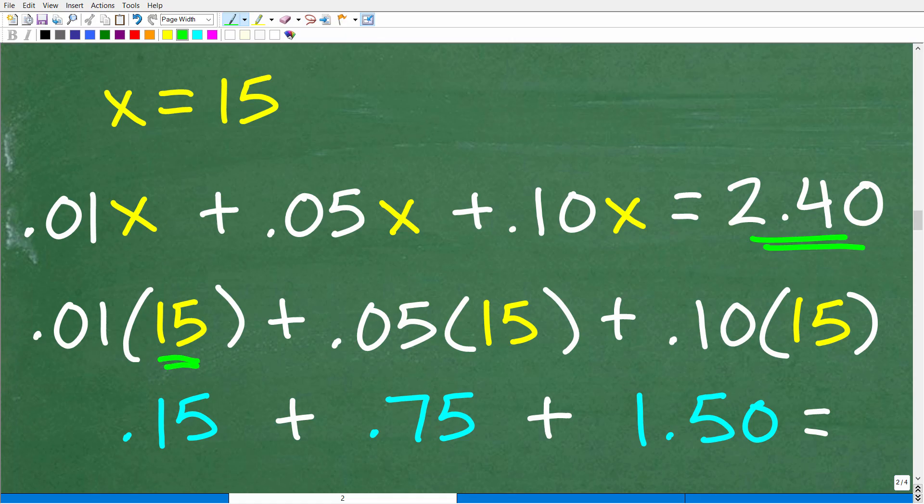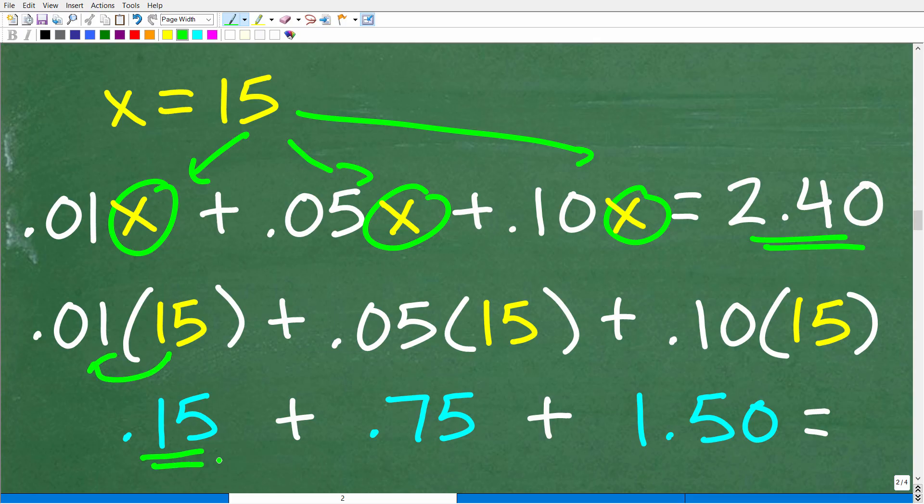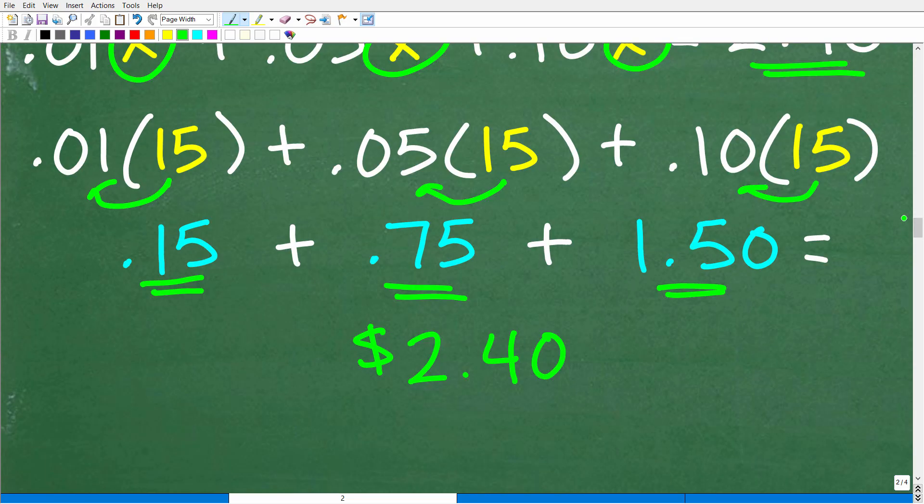If we have 15 pennies, that's 15 times 0.01 or 15 cents. If we have 15 nickels, that's 15 times 0.05 or 75 cents or 0.75. If we have 15 dimes, we're going to have $1.50. If we add up 15 cents, 75 cents, and $1.50, we get back to that $2.40. So 15 is a good solution.